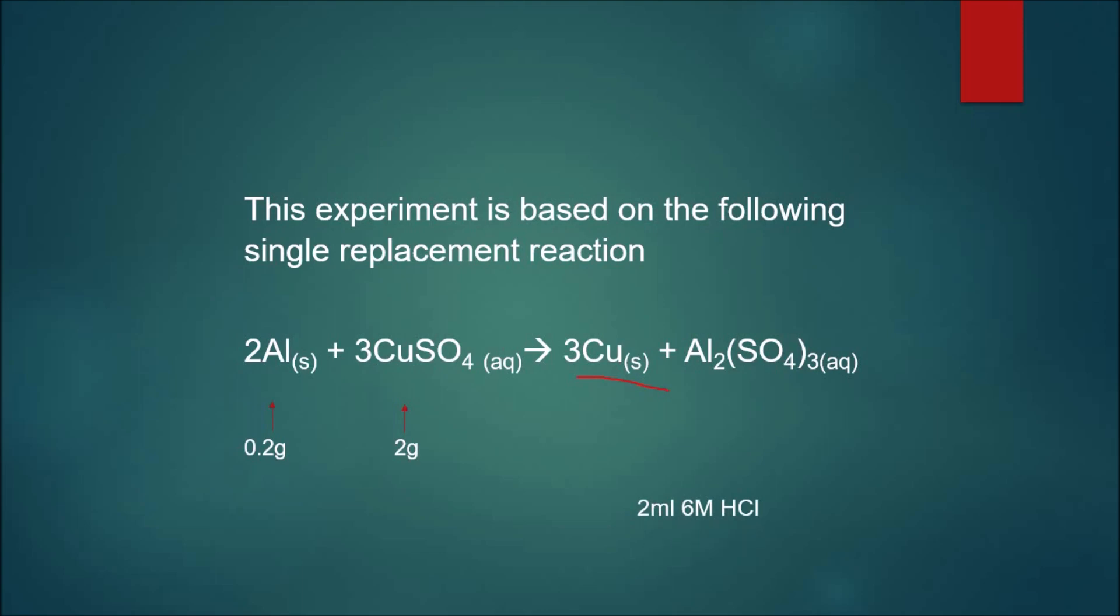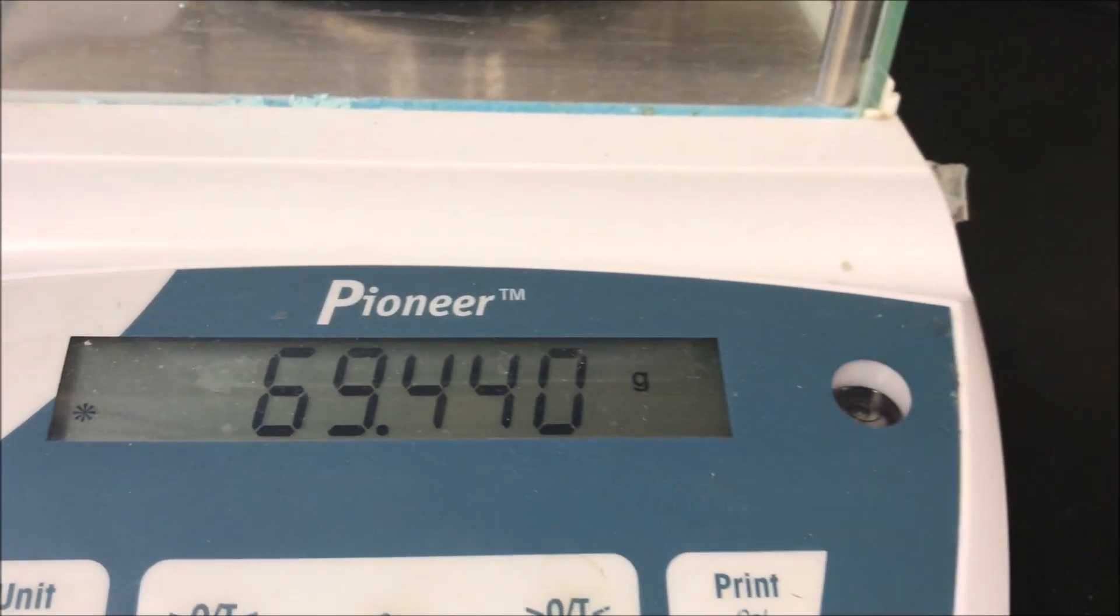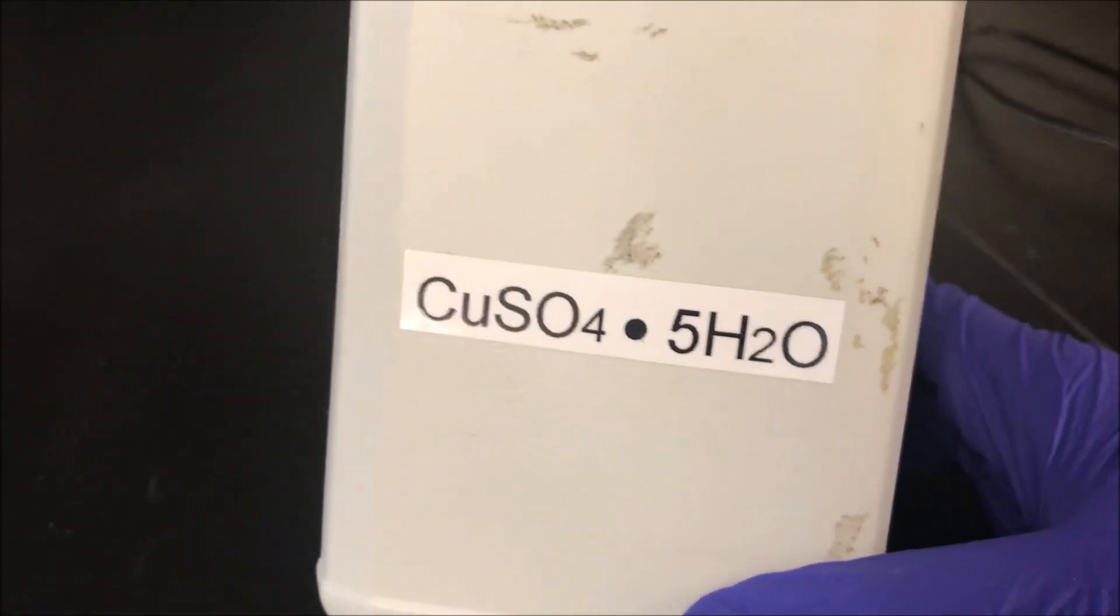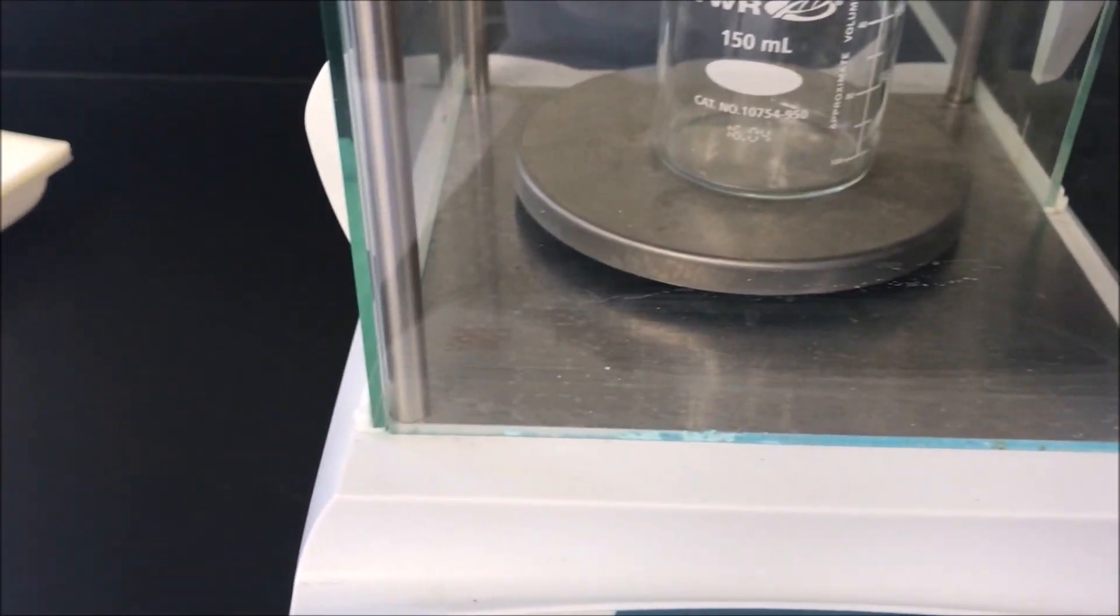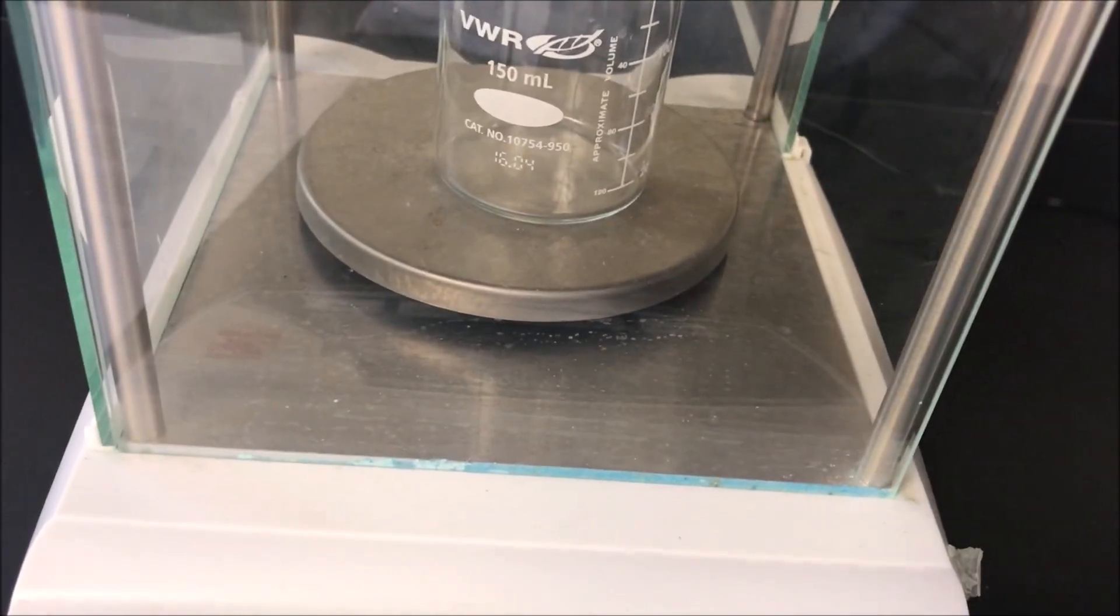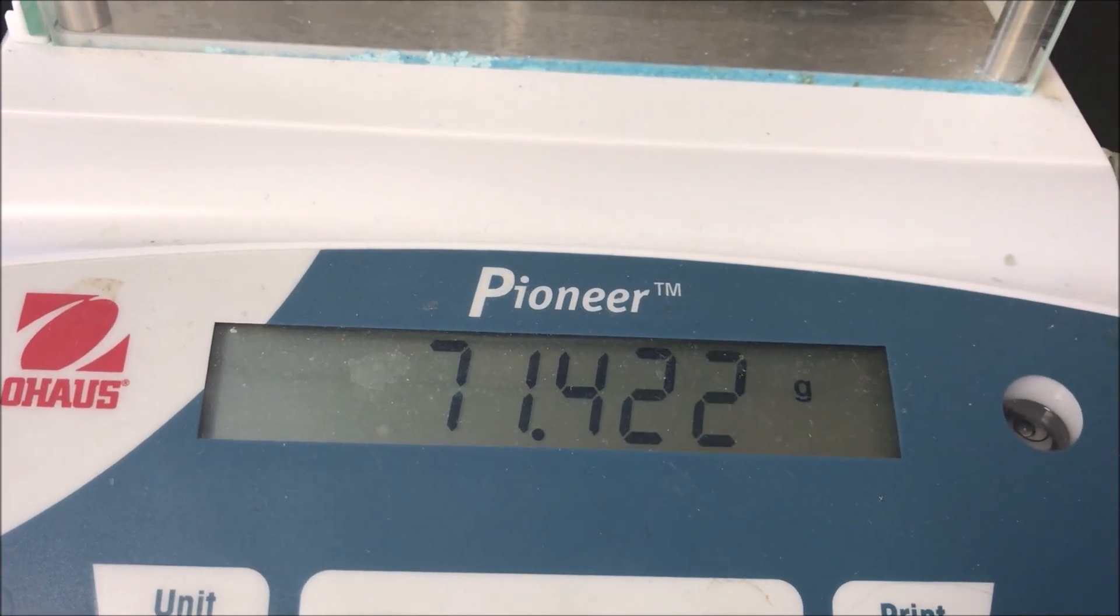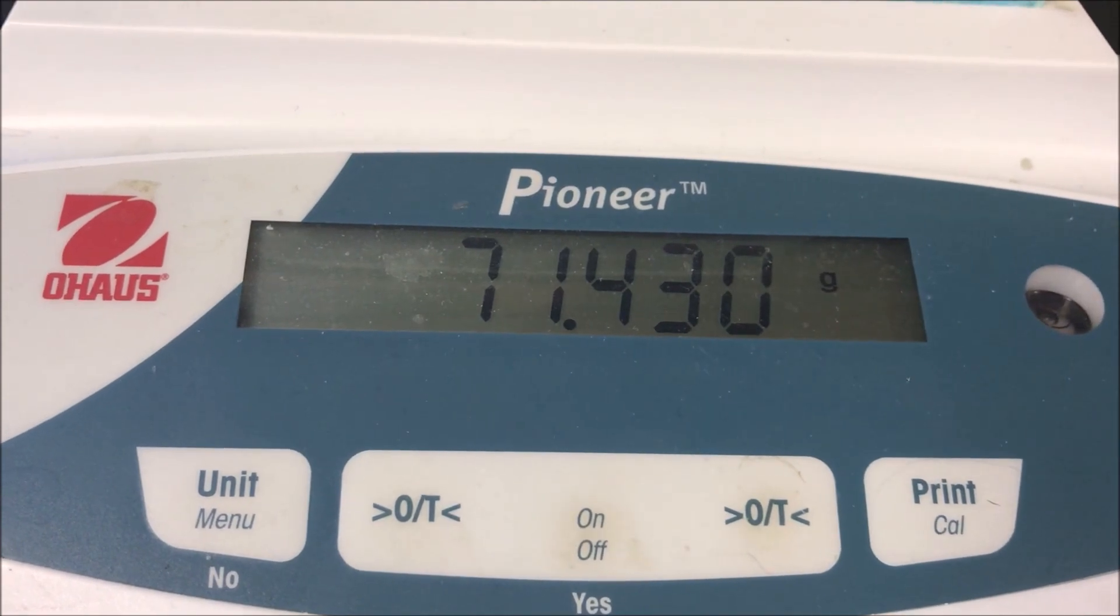First we weigh an empty beaker and add 2 grams of copper sulfate. We use copper sulfate pentahydrate. The empty weight of the beaker is 69.440 grams. To this, add 2 grams of CuSO4·5H2O copper sulfate pentahydrate. Now note down the value: 71.440 grams.